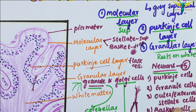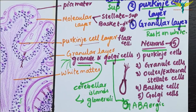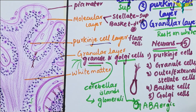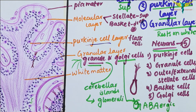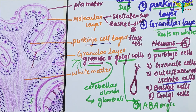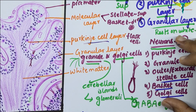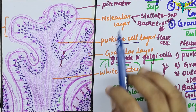So, this is all about the histology of the cerebellar cortex. Remember, it contains three layers: the molecular layer, the Purkinje cell layer, and the granular layer. It contains five types of neurons: the Purkinje cells in the Purkinje cell layer, the granule cells in the granular layer, the outer or external stellate cells and basket cells in the molecular layer, and the Golgi cells also in the granular layer. Remember these five neurons and these three layers.